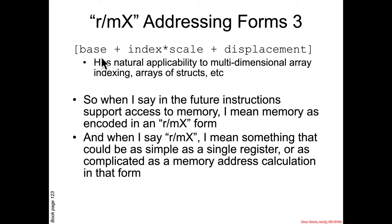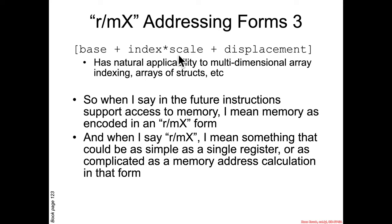You can imagine that base plus index times scale plus displacement has natural applicability to multidimensional arrays, arrays of structs, and so forth. For a simple 4x4 array, the base starts at the 0,0 entry. To reach index [1][0], the displacement might be 4 times the element size — skipping four elements forward — while the index would be 0 and the scale the element size. This is why Intel designed this more complicated addressing mode.